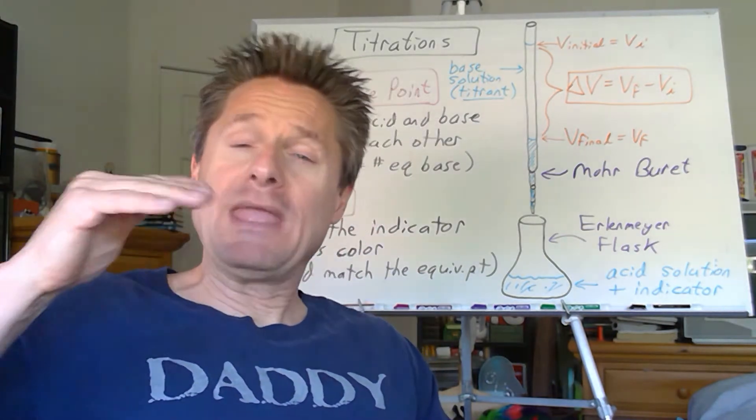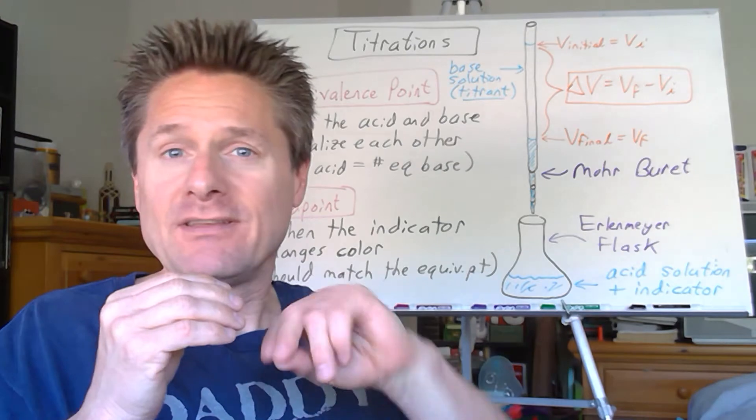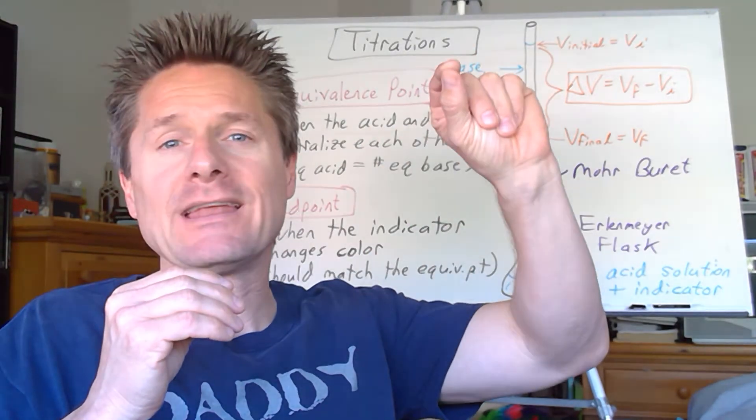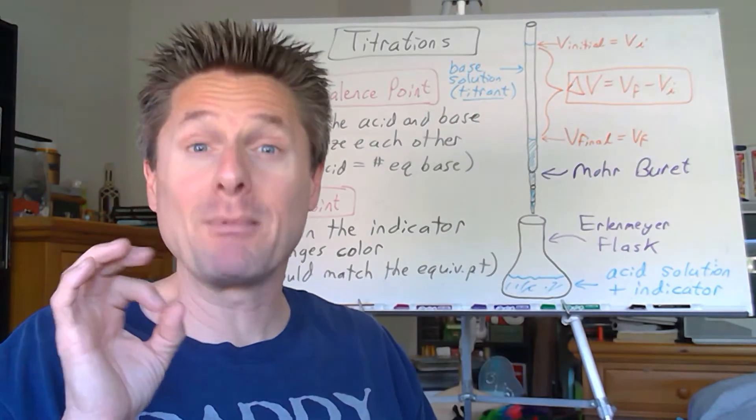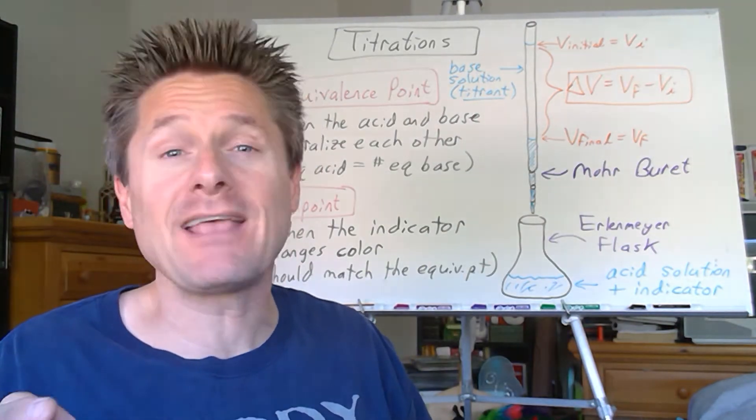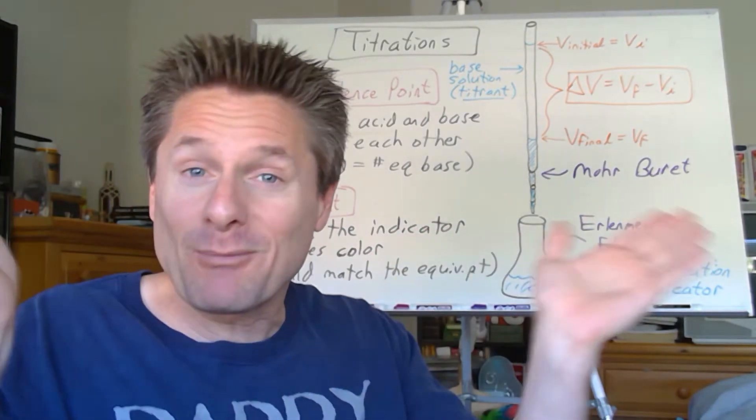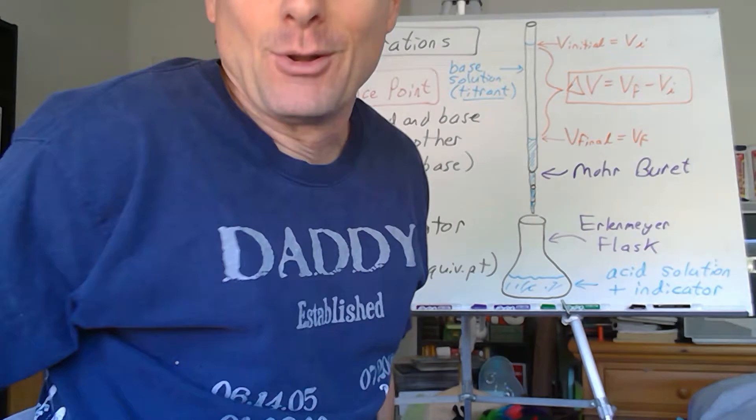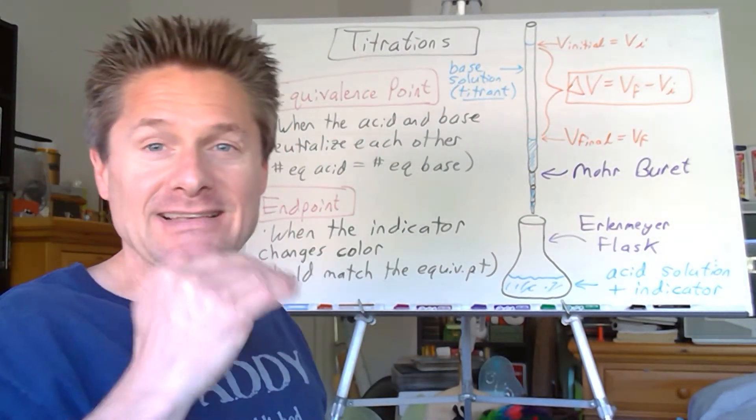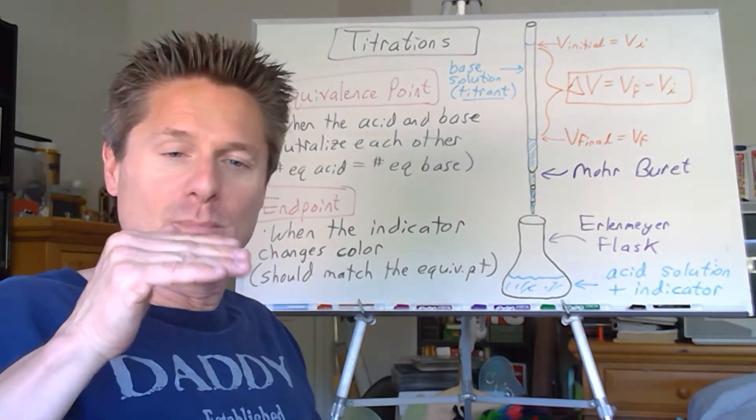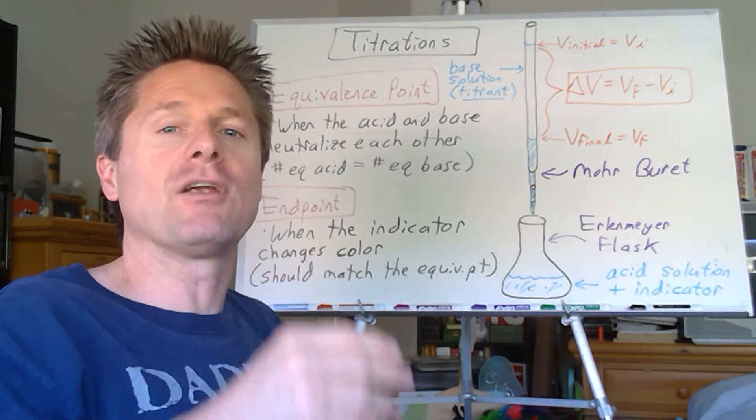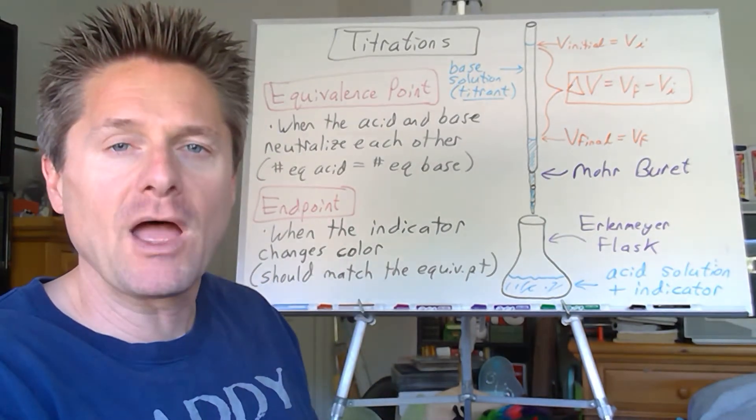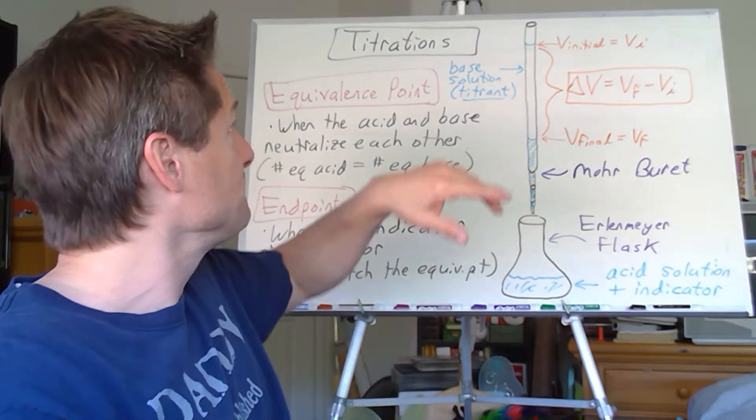We're going to start with what's the pH in the beginning before we add any titrant to our solution, and then we're going to take it all the way through to where the indicator changes color and all the way past that. We're going to be able to calculate, I know you're so excited about this because in lab we just did it till it turned pink and we're done. But we're going to go way beyond that and look at it piece by piece, kind of like a time frame photography.